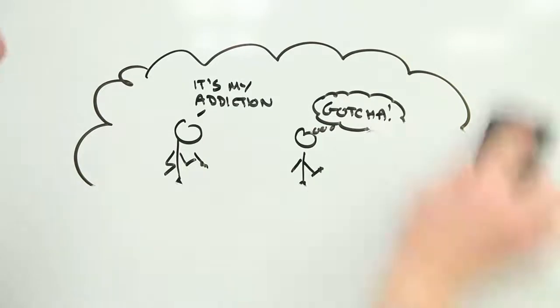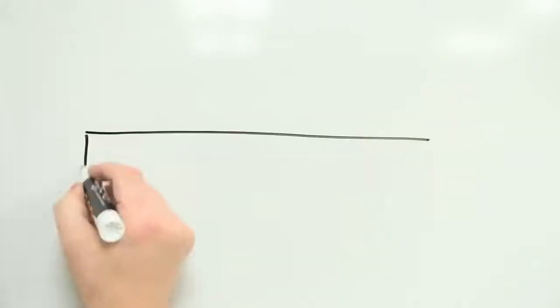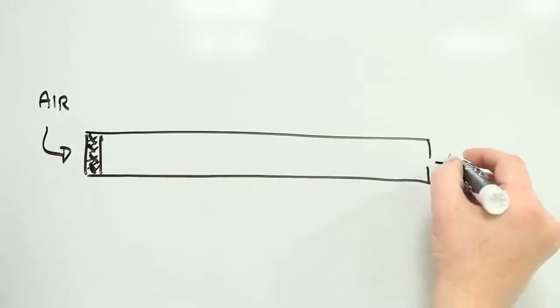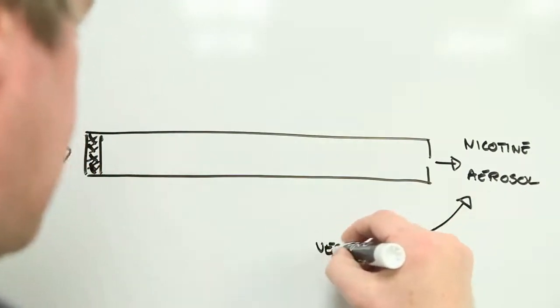Electronic cigarettes are primarily designed to get nicotine into your body via your lungs without many of the downsides of conventional cigarettes. The beauty of the system is that you retain the physical experience of smoking—or vaping as it's called in this case—but without the actual smoke.